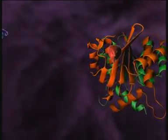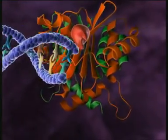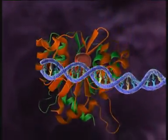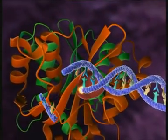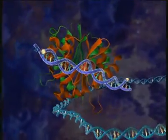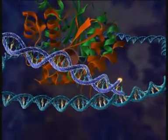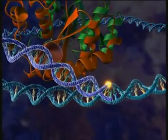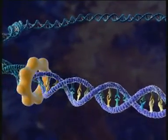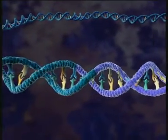Now integrase goes into action. It cleaves a dinucleotide from each 3' end of the DNA, creating two sticky ends. Integrase then transfers the DNA into the cell nucleus and facilitates its integration into the host cell genome. The host cell genome now contains the genetic information of HIV.